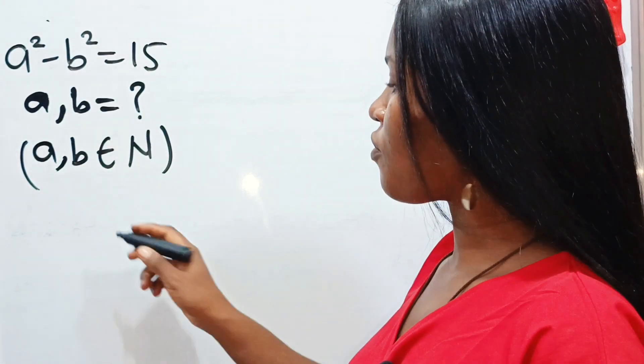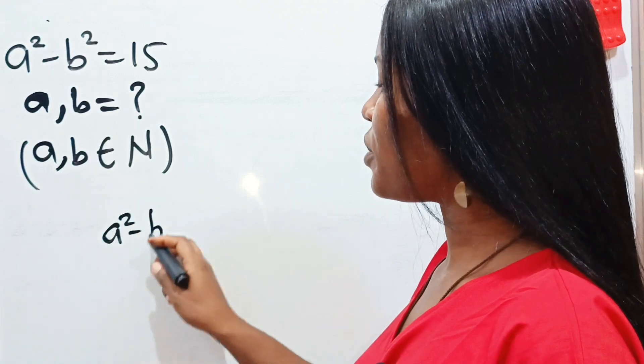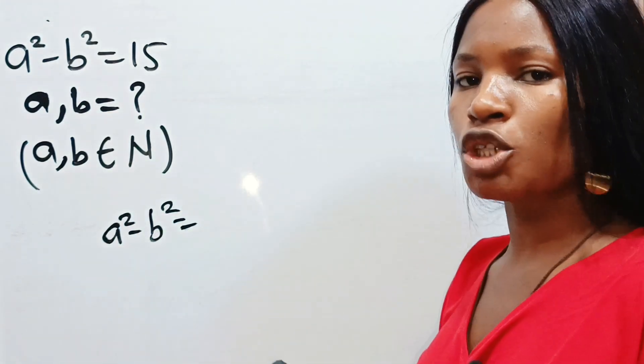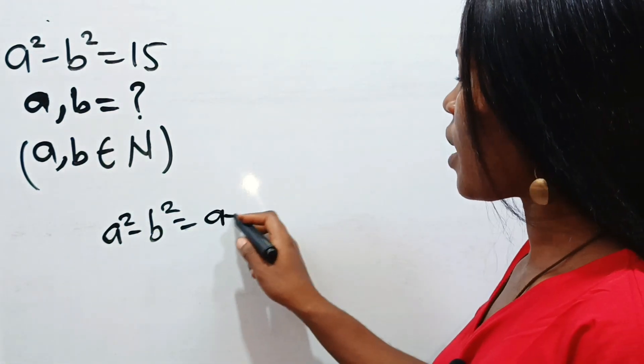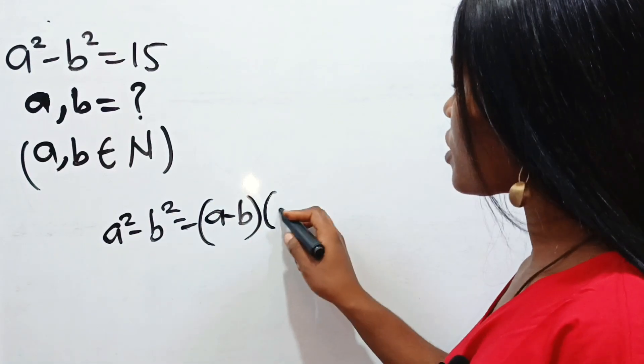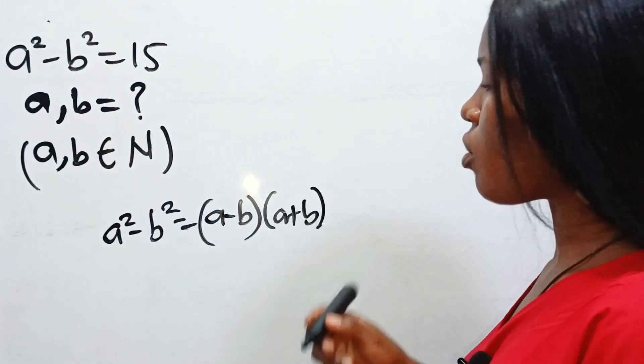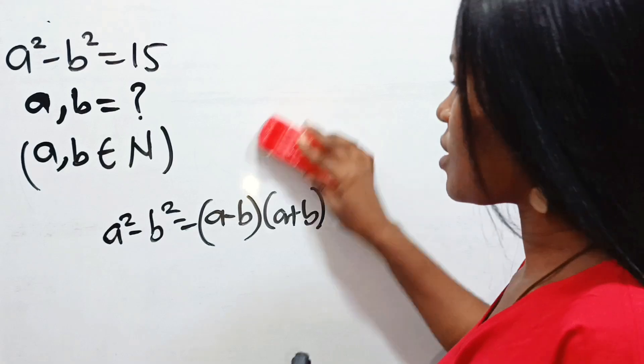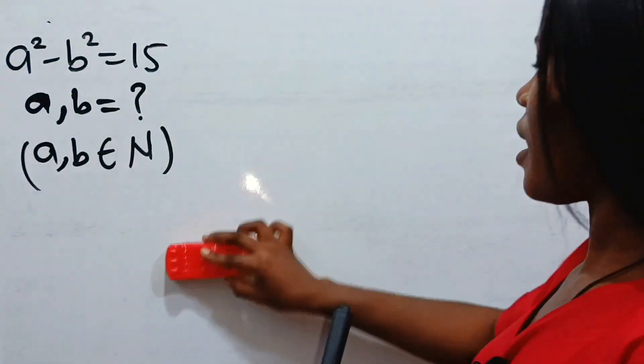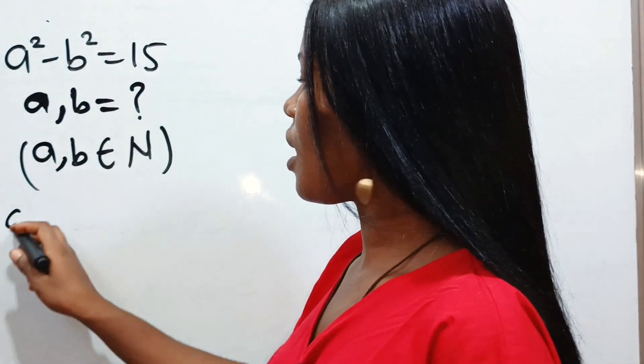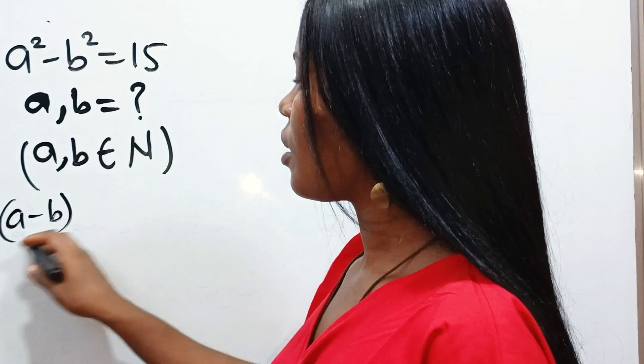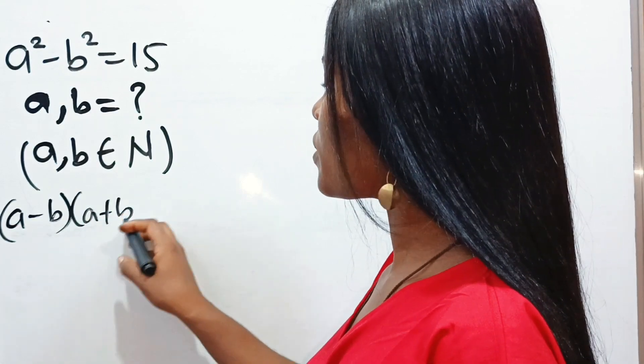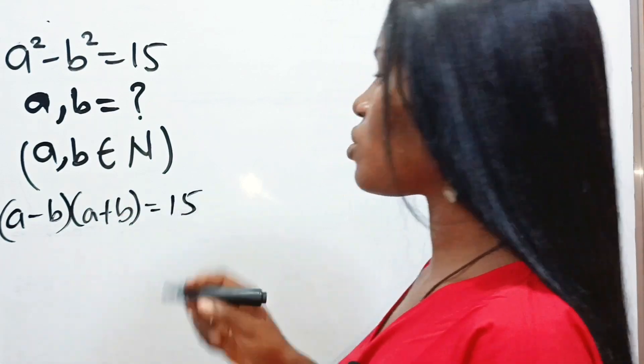Remember that when you have a squared minus b squared, according to algebra, this is equal to a minus b multiplied by a plus b. That means we can express this as a minus b multiplied by a plus b equals 15.